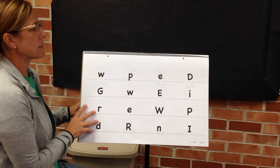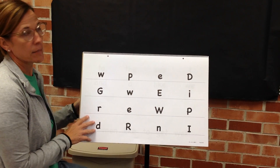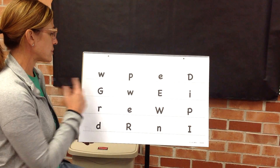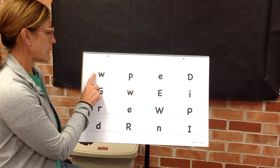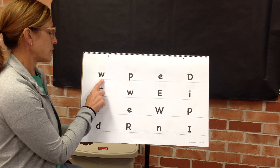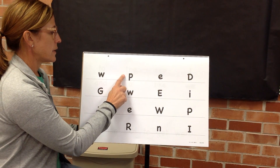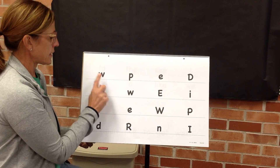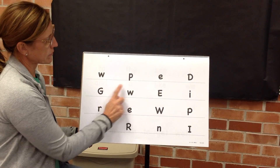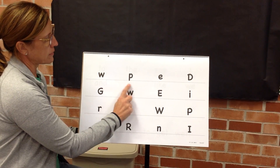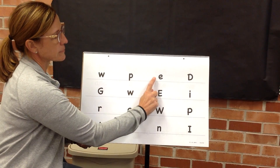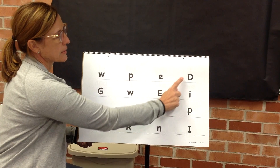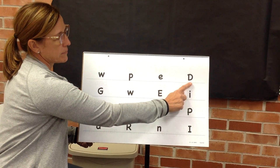Next we will say names for some letters. I will model the first two. My turn. Name. W. Name. P. Your turn. Name. W. Name. P. Name. E. Name. D.